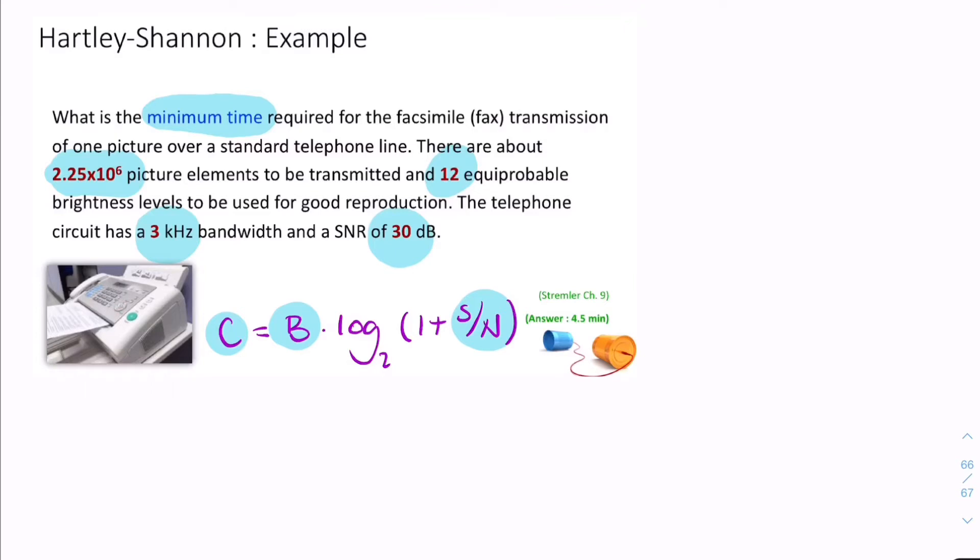So, the signal-to-noise ratio is 30 decibels, but we still need to calculate it as a ratio. So that's the first thing. We need the bandwidth. The bandwidth is given there. And eventually, we need to use the channel capacity to find the time. So let's take this step by step.